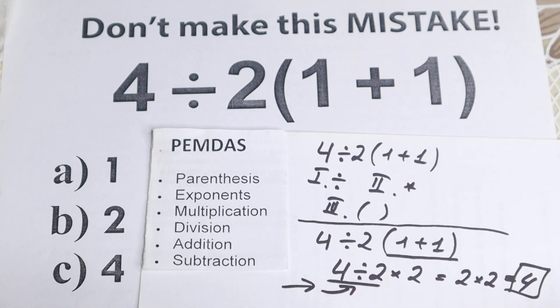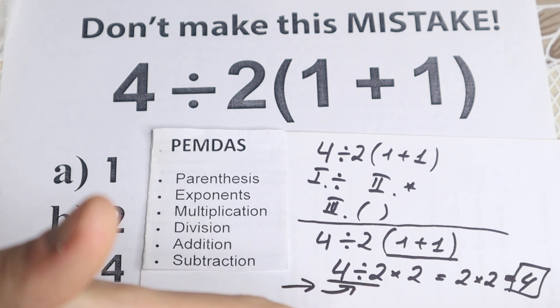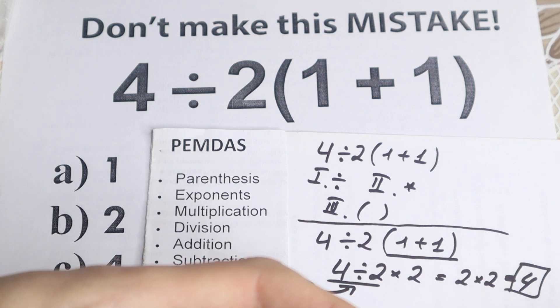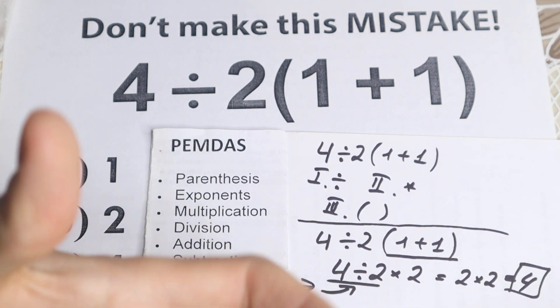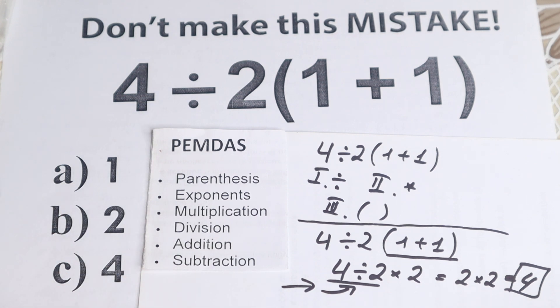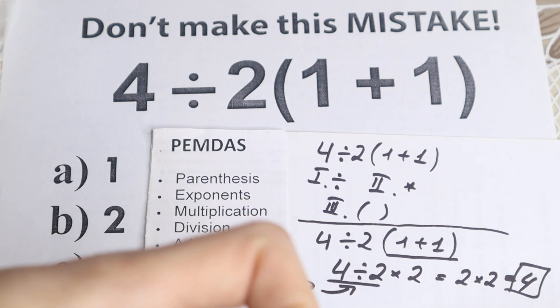Of course you can easily plug this problem into your calculator and you can easily check this answer in Wolfram Alpha. Of course a lot of countries, a lot of discussion about this problem. A lot of countries have different orders of operation and it is really great, I think. A lot of countries, a lot of discussion, a lot of views on YouTube about it, and we can easily discuss this question.